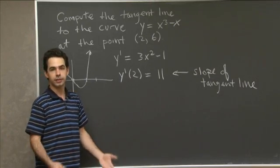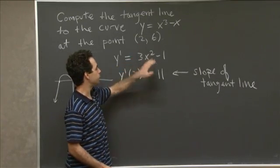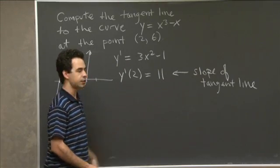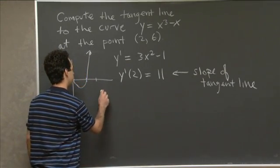To compute the tangent line, we have point (2, 6) and slope 11. We can plug into point-slope form.